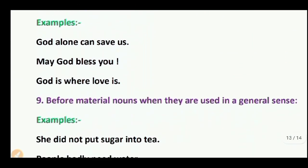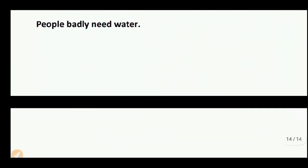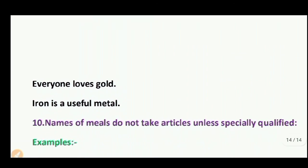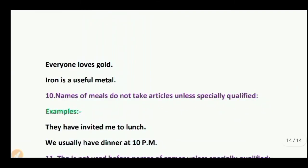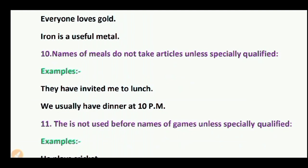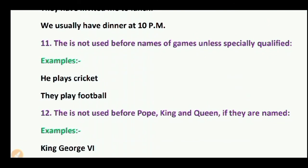Omission point 9: No article before material nouns when used in a general sense. Examples: She did not put sugar into tea. People barely need water. Everyone loves gold. Iron is a useful metal. Omission point 10: Names of meals do not take articles unless specially qualified. Examples: They have invited me to lunch — not 'to the lunch.' We usually have dinner at 10 pm. Omission point 11: 'The' is not used before names of games. Examples: He plays cricket. He plays football — not 'the cricket' or 'the football.'